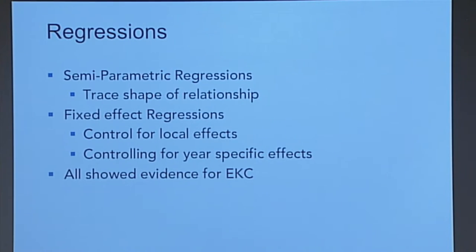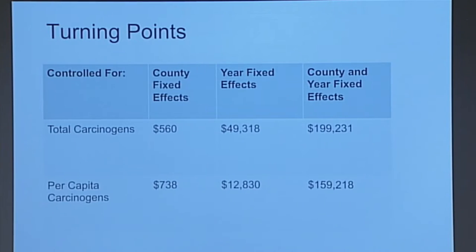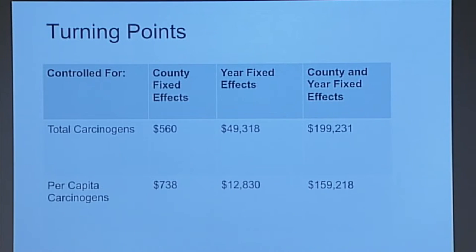I'm going to spare you going regression by regression and instead show you the implied turning points of income for each regression. When I controlled for county fixed effects, effectively testing the temporal hypothesis, I found a very low turning point level of income, indicating we are most likely on the downward trending section of the EKC with regard to time. However, when I looked at year fixed effects, I found a turning point level of income within the range that people actually experience, indicating the year fixed effects is a test of the spatial hypothesis, and the spatial hypothesis may in fact be correct.